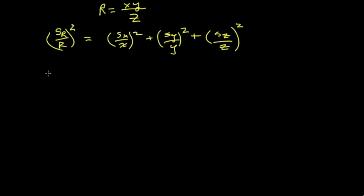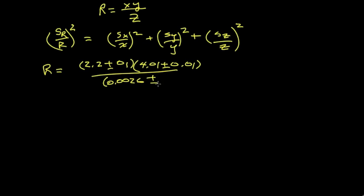Let's take a concrete example. Let's suppose that r is calculated by the product of 2.2 times 4.01, and they have associated standard deviations. And let's suppose we divide by the quantity 0.0026, and it has an uncertainty of 0.0006. The numerical value of r is 3.39 times 10 to the third.